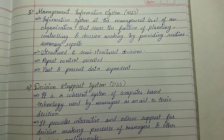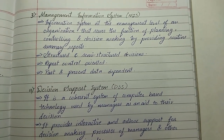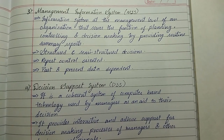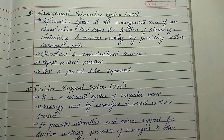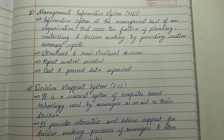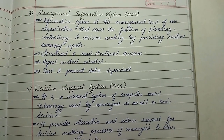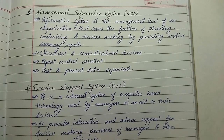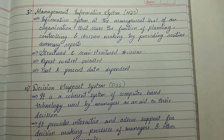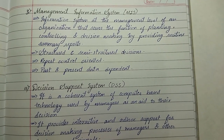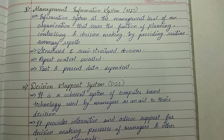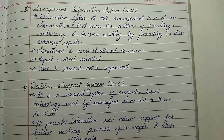The third is the Management Information System (MIS) — an information system at the management level of an organization. It serves the functions of planning, controlling, and decision making by providing routine summary reports. It handles structured and semi-structured decisions and its reports are control-oriented.